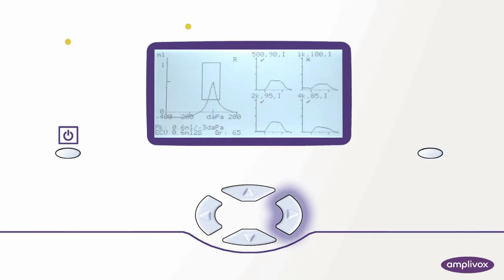Selecting the right key will bring us to an overview showing the ipsilateral reflex outcome for all four frequencies. Selecting the right button again will show the reflex curves individually and in detail.